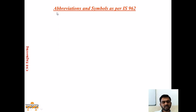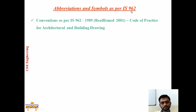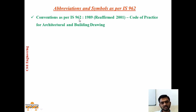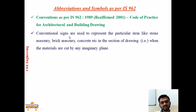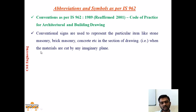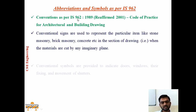Now let us see abbreviations and symbols as per IS 962 1989 reaffirmed in 2001, which is the code of practice for architectural and building drawing. Conventional signs are used to represent particular items like stone masonry, brick masonry, and concrete in the section of a drawing when materials are cut by an imaginary plane. Different sign conventions are used for brick masonry, concrete, electrical fittings, plumbing fittings, tiling work, or stone masonry.